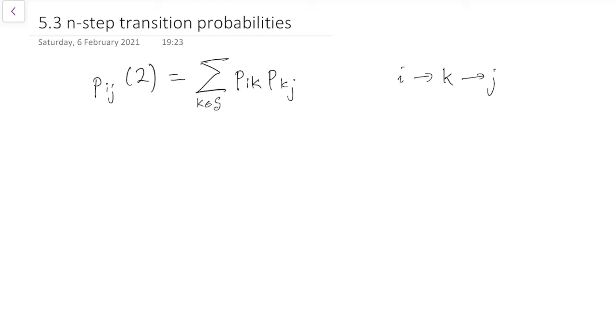So that's actually the general expression for what we did in the last subsection. We calculated Pij2 by being the sum over k of Pik, Pkj.